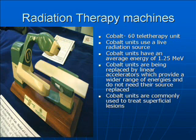Radiation therapy machines: the cobalt-60 teletherapy unit. Cobalt units use a live radiation source and have an average energy of 1.25 mega-electron volts. Cobalt units are being replaced by linear accelerators, which provide a wider range of energies and do not need their source replaced. Cobalt units are commonly used to treat superficial lesions. The unit shown on this slide is from the early 1950s.